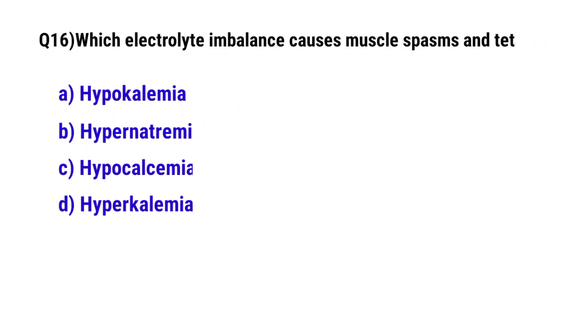Question number 16: Which electrolyte imbalance causes muscle spasm and tetany? The correct option is C: hypocalcemia.